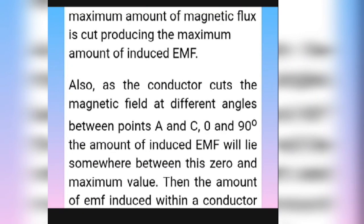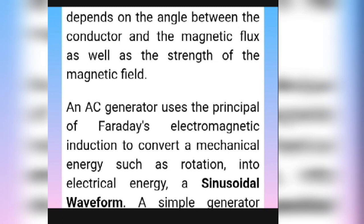But if the conductor moves at a right angle to the magnetic field, as in the case of points C and D, the maximum amount of magnetic flux is cut, producing the maximum amount of induced EMF. Also, when the conductor cuts the magnetic field at different angles between point A and C — that is, between zero degrees and 90 degrees — the amount of induced EMF will lie somewhere between zero and maximum. The amount of EMF induced within the conductor depends on the angle between the conductor and the magnetic field, as well as the strength of the magnetic field.